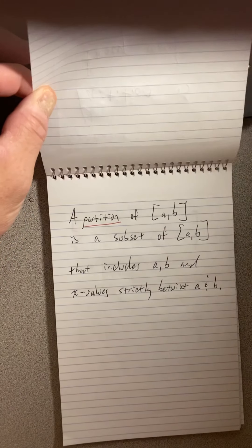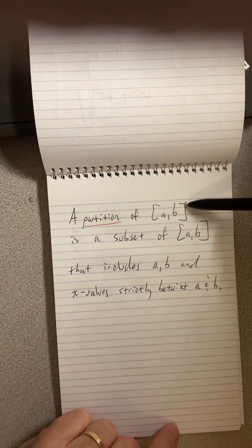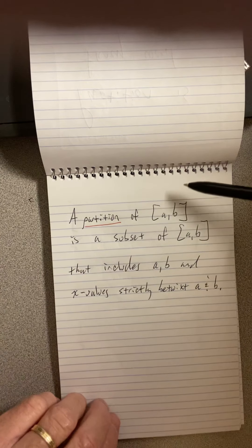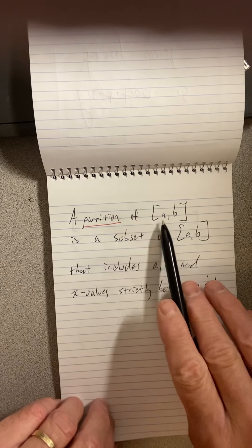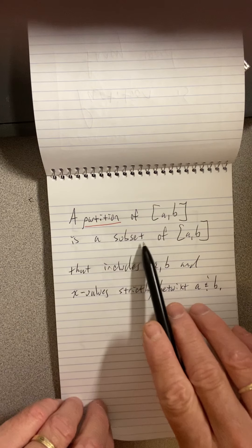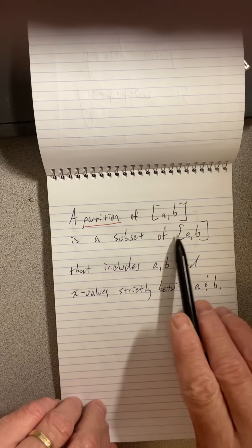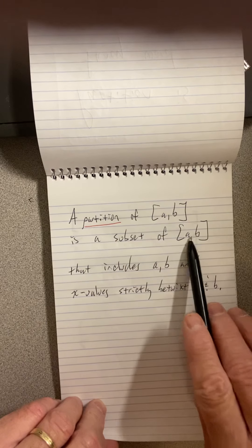So we have an interval here, a closed interval, which means a and b are included. A partition of that interval is a subset of the interval. That means it chooses elements of this interval, so we're going to get numbers out of here.